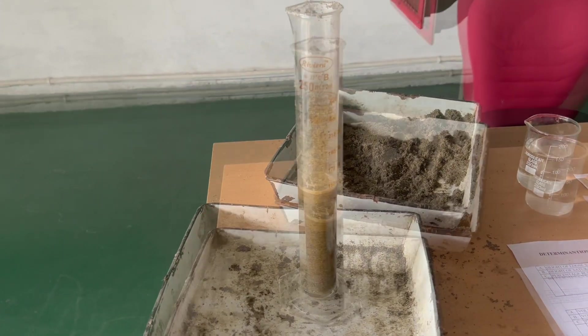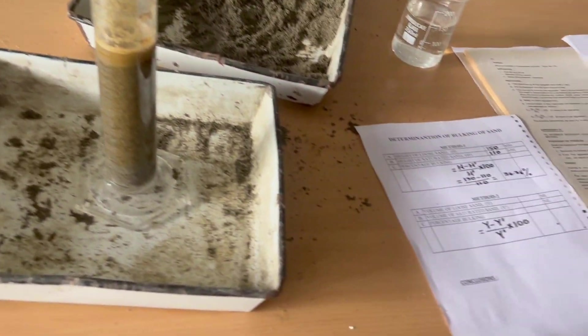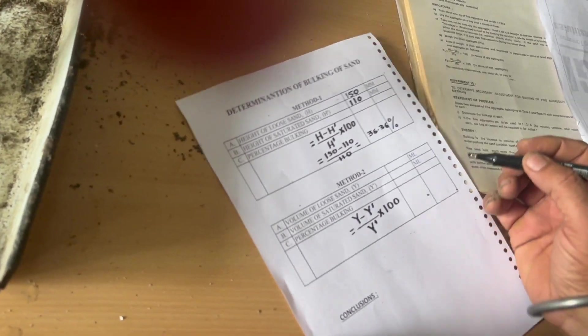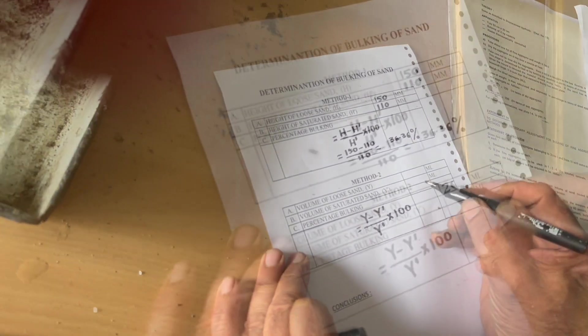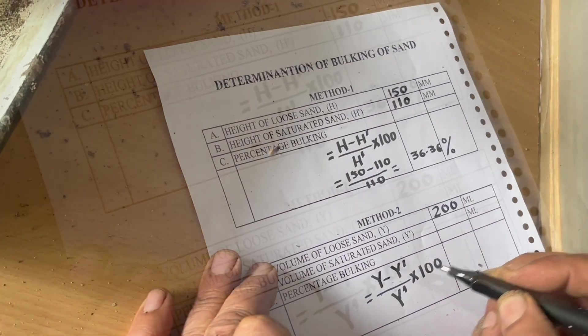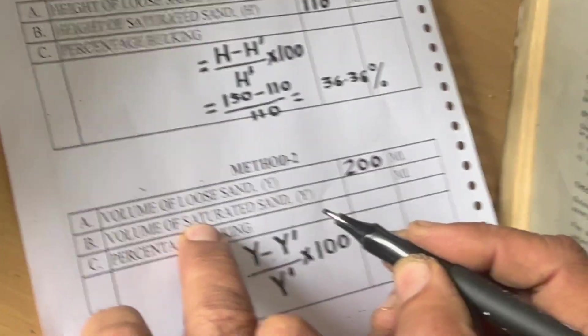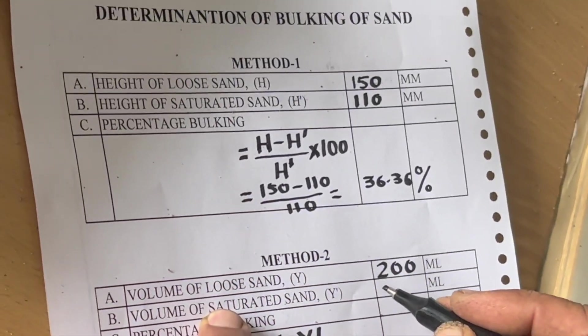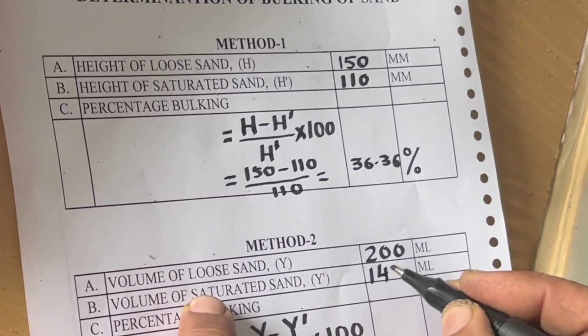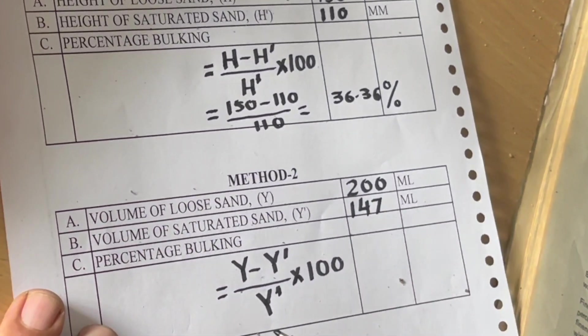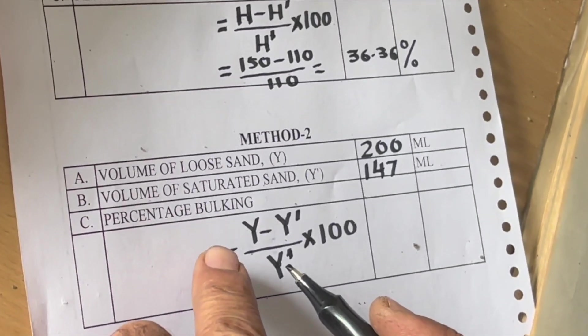Now we have taken the first volume of loose sand. That is why it is 200 ml. Then volume of saturated sand. That is why it comes to be 147 ml. So we can calculate the percentage of bulking.